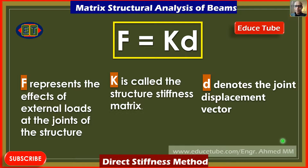In the matrix stiffness method of analysis, the joint displacements of the structure are determined by solving a system of simultaneous equations, which is expressed in the form F equal to KD. Here, D denotes the joint displacement vector, F represents the effects of external loads at the joints of the structure, and K is called the structure stiffness matrix.